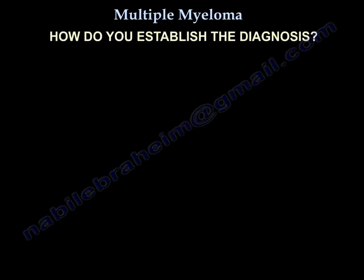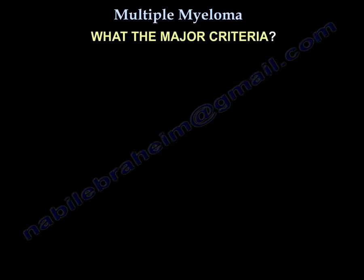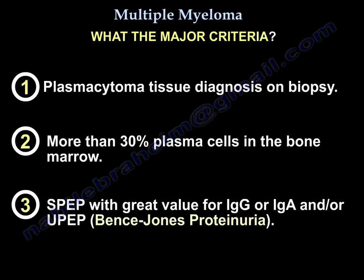To establish the diagnosis, you need one major and one minor criterion, or three minor criteria. The major criteria are: number one, plasmacytoma tissue diagnosis on biopsy; number two, more than 30% plasma cells in bone marrow; and number three, SPEP with elevated IgG or IgA, and/or UPEP showing Bence-Jones proteinuria.